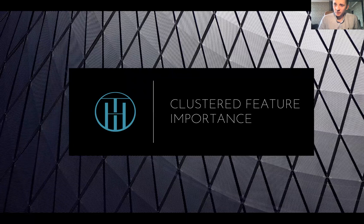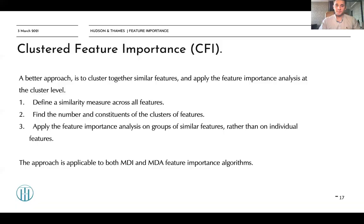Now let's discuss how clustered feature importance is used to tackle the problem of substitution effects. A better approach is to cluster together similar features and apply the feature importance analysis like MDA or MDI at the cluster level. The first thing we need to understand is how to define the similarity measure across all features. Second, we can find the number of constituents of the clusters and apply the feature importance analysis on the group of similar features rather than on individual features.